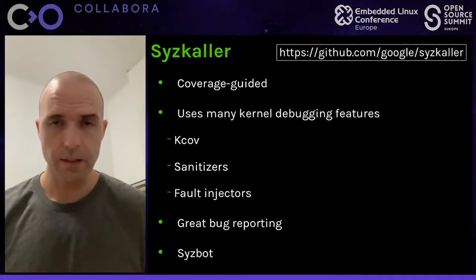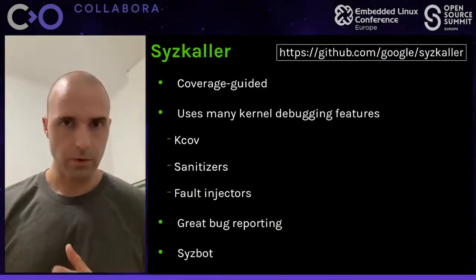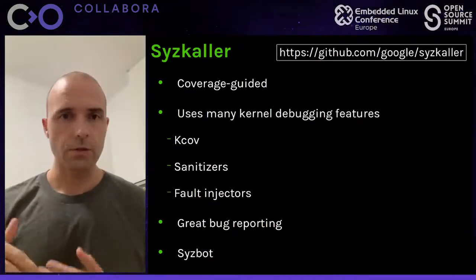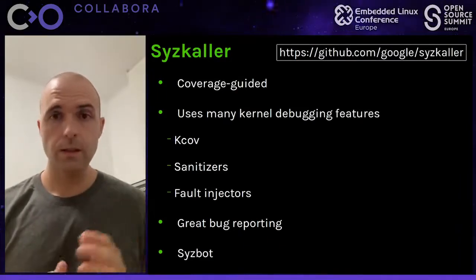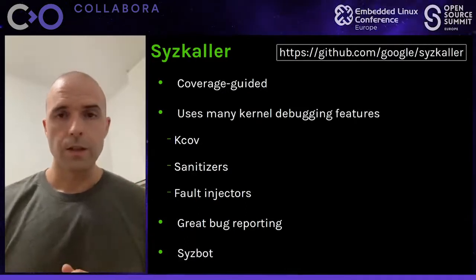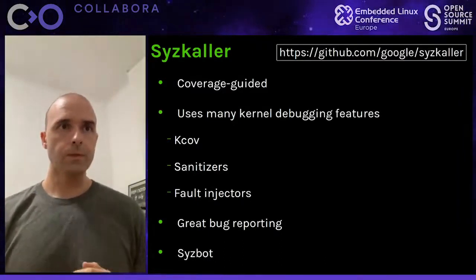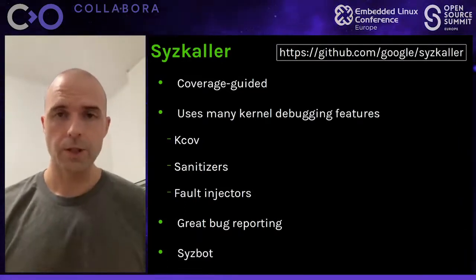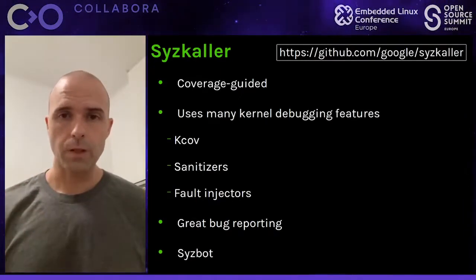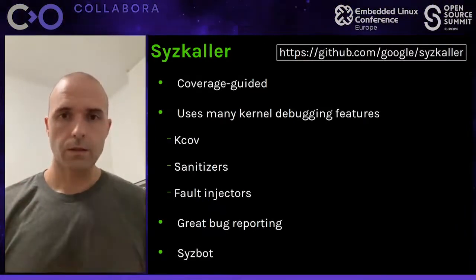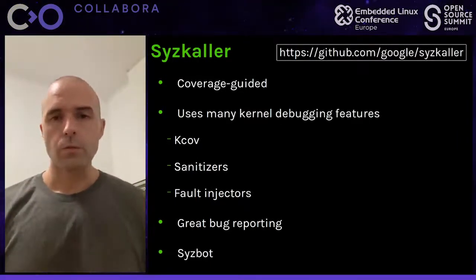What does coverage-guided mean? Syzkaller, like any other fuzzer, will generate sequences of instructions as test programs — in this case mostly system calls. But this generation process is not completely random. Instead, it keeps track of the amount of kernel code that ran as a result of running each of these generated programs, and uses that information to guide the code generation process. The idea is to cover as much kernel code as possible. So when Syzkaller mutates its test corpus, code coverage is one of the most important aspects — a program that covers new kernel code has a greater mutation potential.